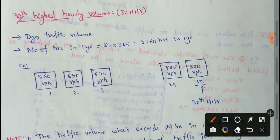And all other hourly volumes of the year will be less than this volume. For example, one year span, 30th highest hourly volume, traffic volume design.